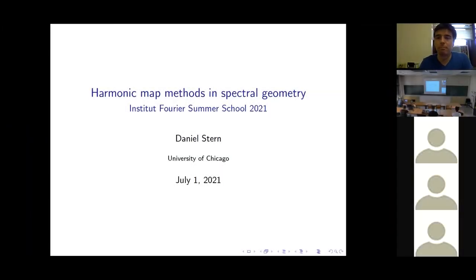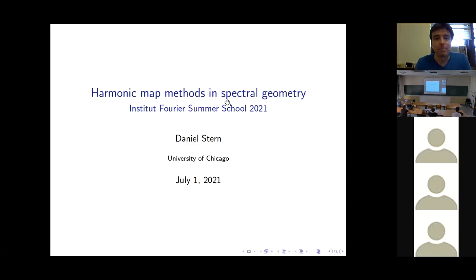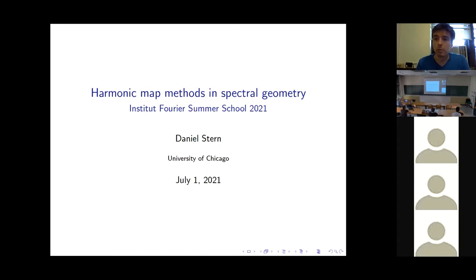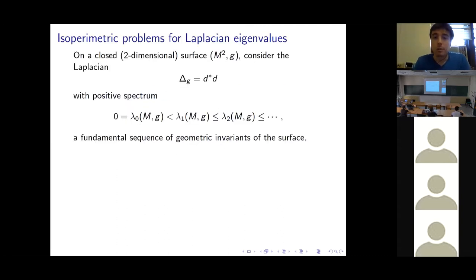Welcome everybody. It's my pleasure to introduce Daniel Stern from Chicago, who will give a lecture on harmonic methods in spectral geometry. Thanks very much for inviting me to speak and for doing such a nice job getting the hybrid format to work. I'm talking about some use of harmonic maps in classical and more modern questions of spectral geometry.